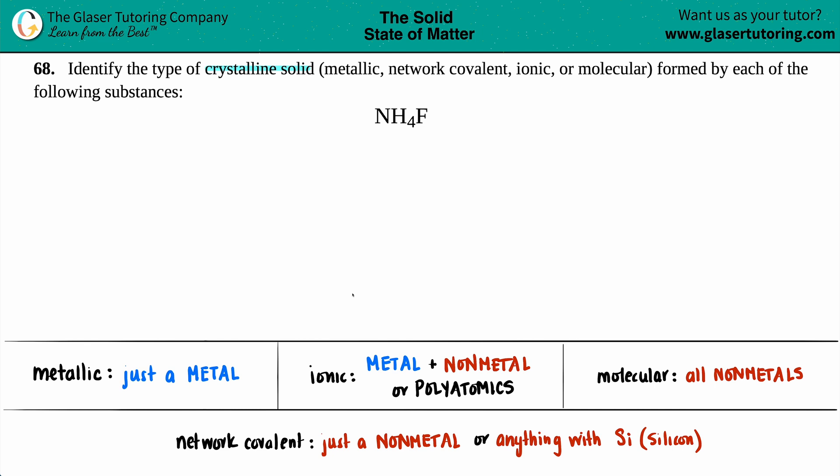If this material is on that, let's start from left to right. You just got to memorize the four different types of crystalline solids. The first one here is a metallic crystalline solid. Would NH4F be a metallic crystalline solid? Well, the word metal is in the word metallic, so in order to have...